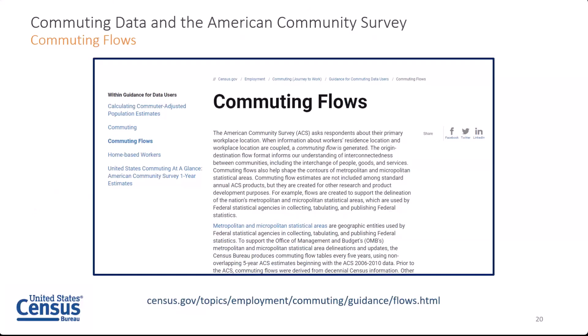Commuting flows are a special application of our place of work information gathered in the commuting module, which we combine with the residence information associated with every record in the American Community Survey. Together, these two pieces of information allow us to have an origin and a destination relationship for every working respondent. These relationships we refer to as commuting flows, and they provide an important resource for many state and local planners. They're also critical to supporting the Office of Management and Budget's construction of the country's metropolitan and micropolitan statistical areas. These county-to-county commuting flows come out every five years, and the most recent came out just this year using the 2016 to 2020 data.